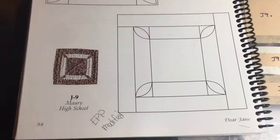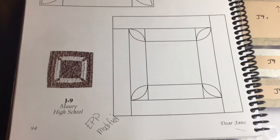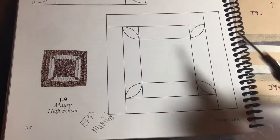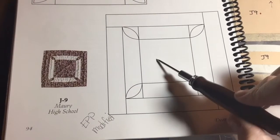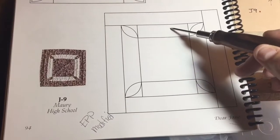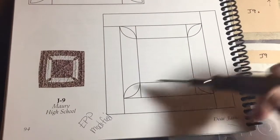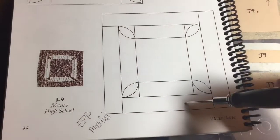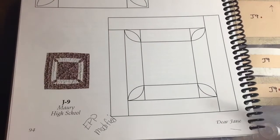Now we're on to the J9 block, and the J9 block is a simpler construction than most of them. We have a center square and then two rectangles, two rectangles, and then a log cabin assembly on the outer section.